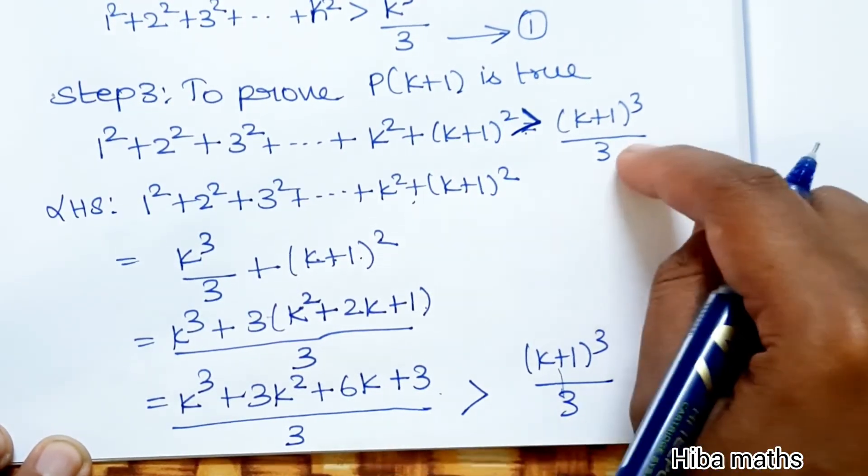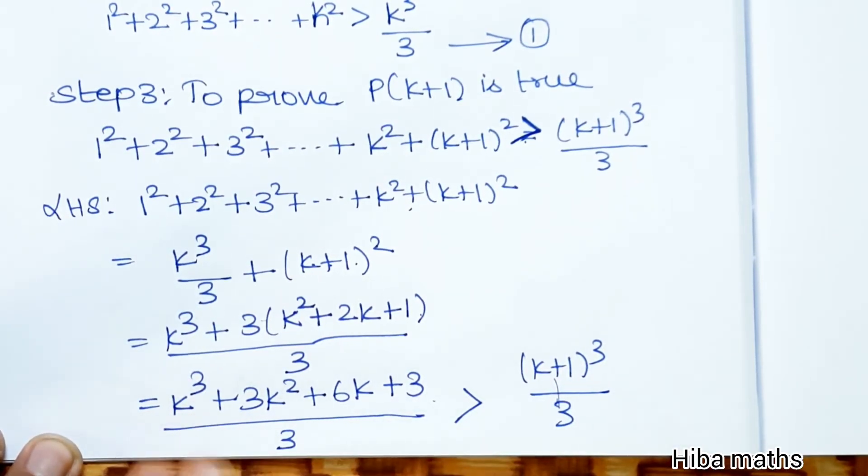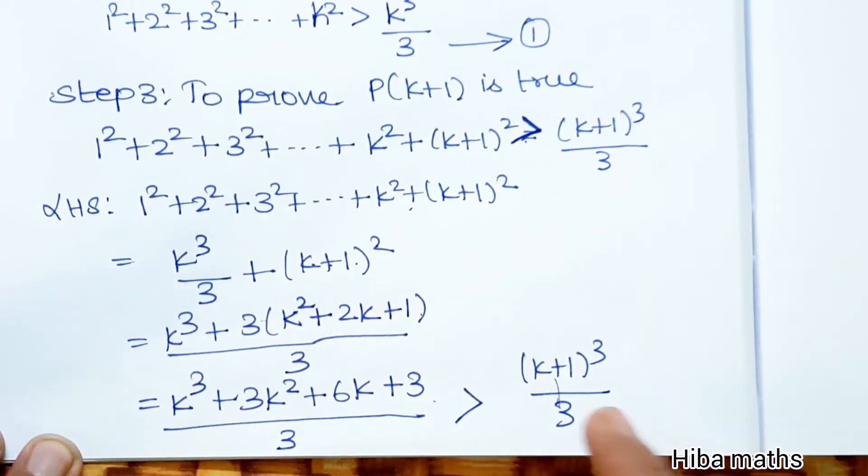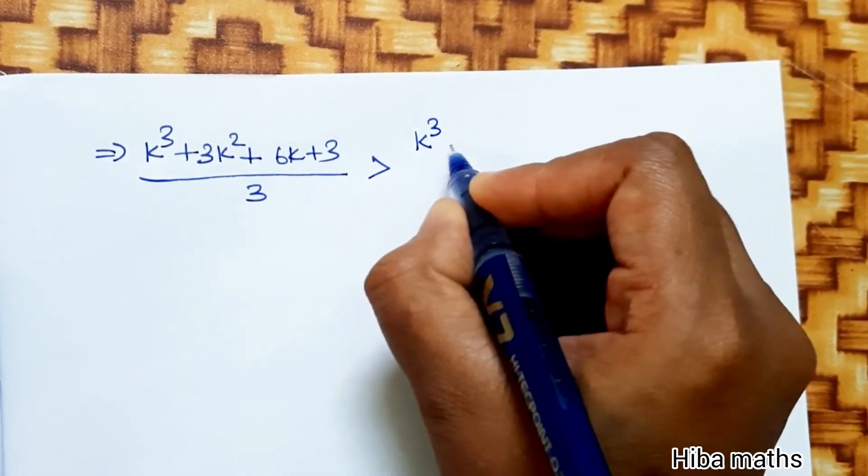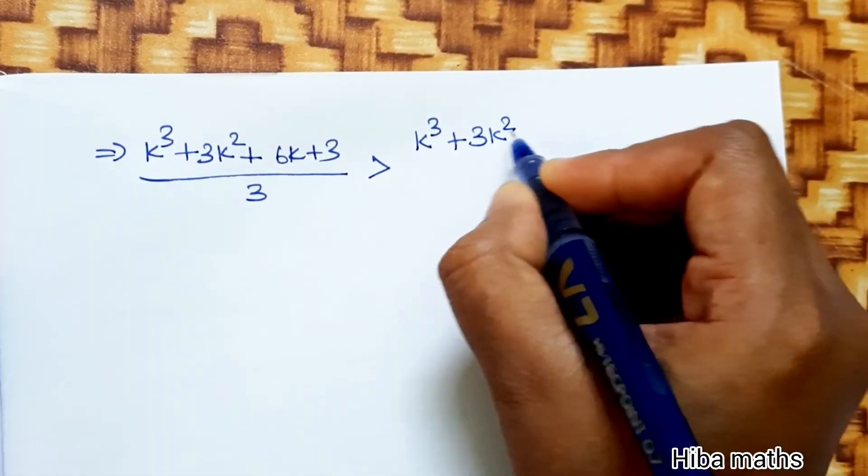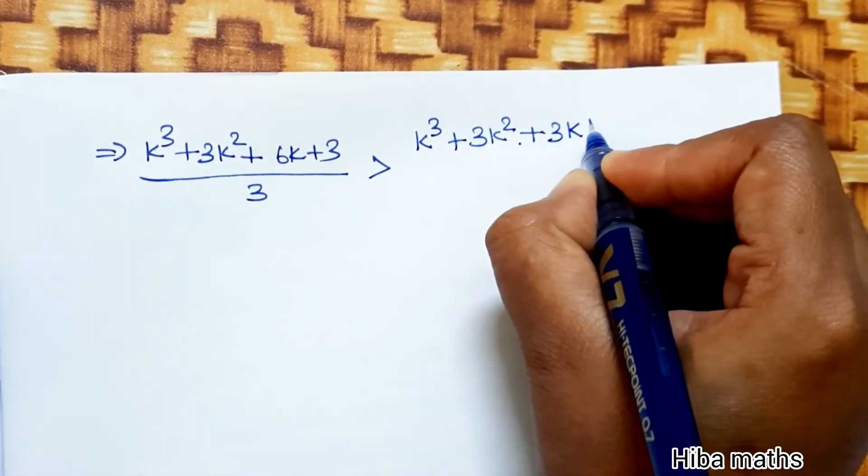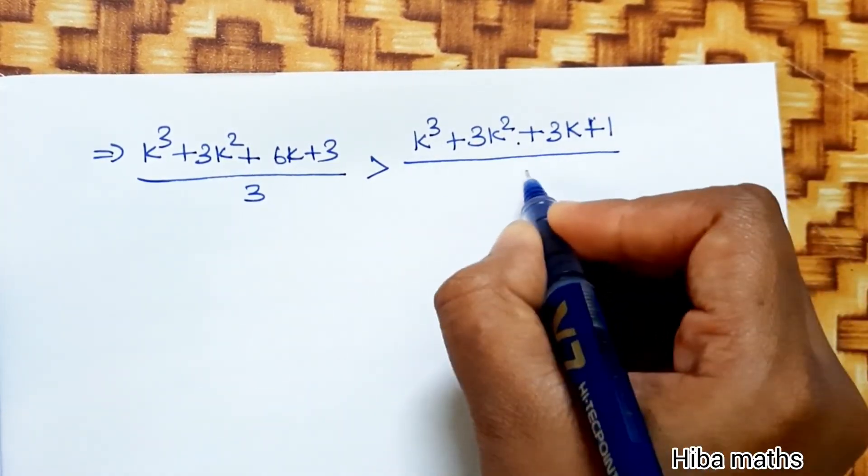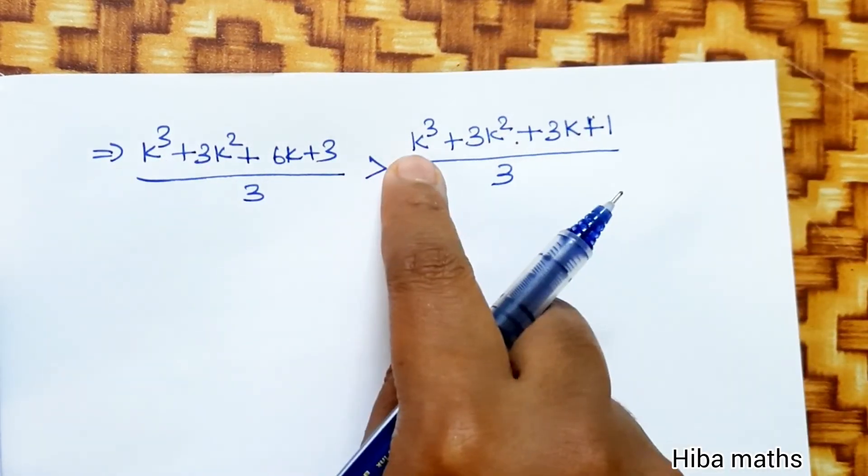This proves the statement. LHS is proved. Now compare with the (k+1)³ formula. The (k+1)³ formula expands to k³ + 3k² + 3k + 1 divided by 3. Now compare the two terms: k³ matches k³,